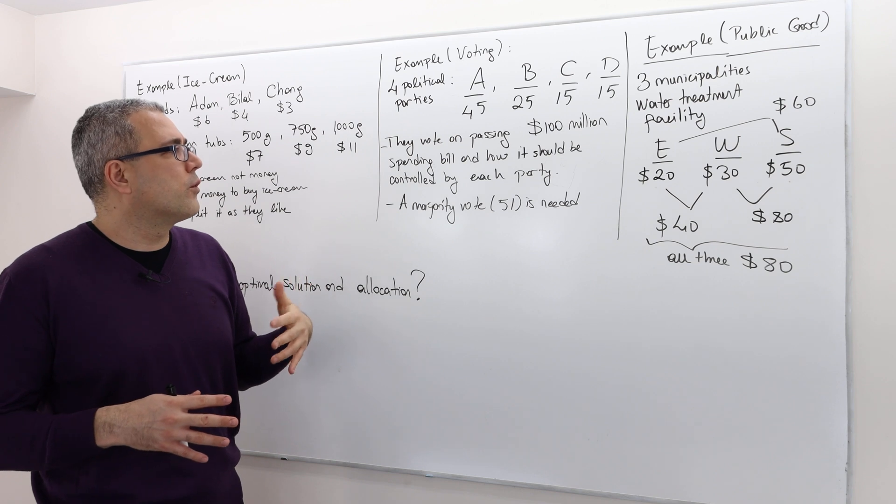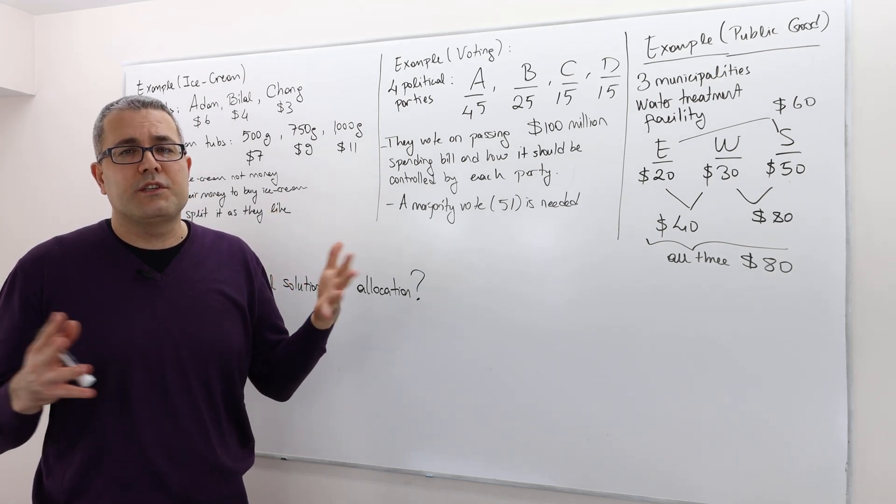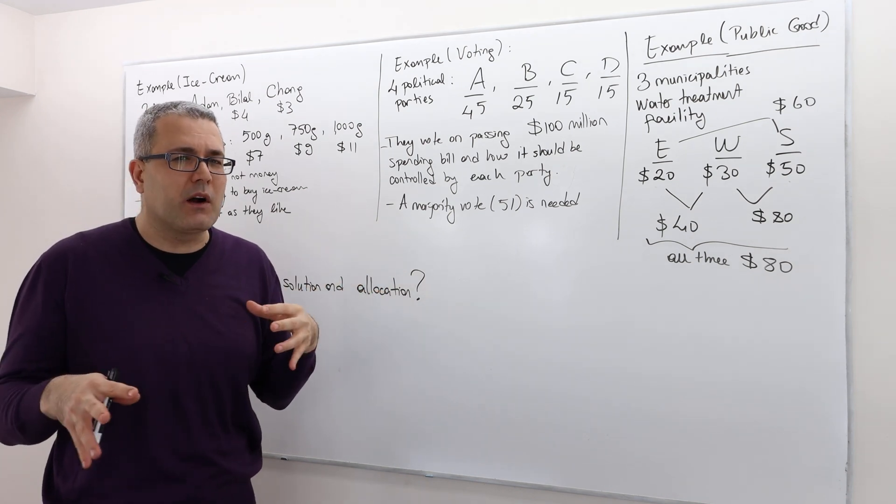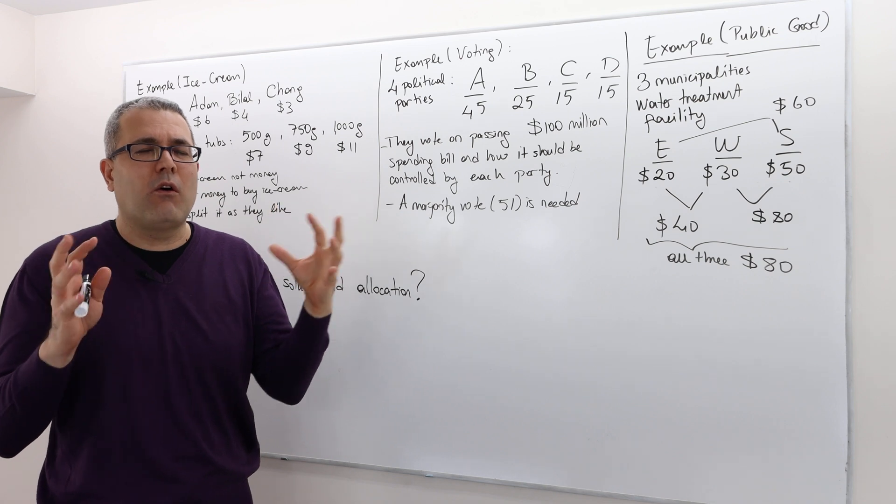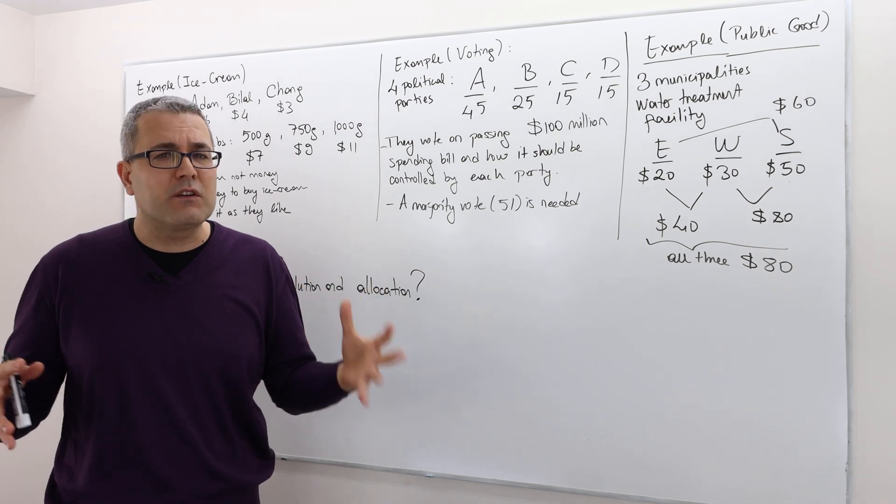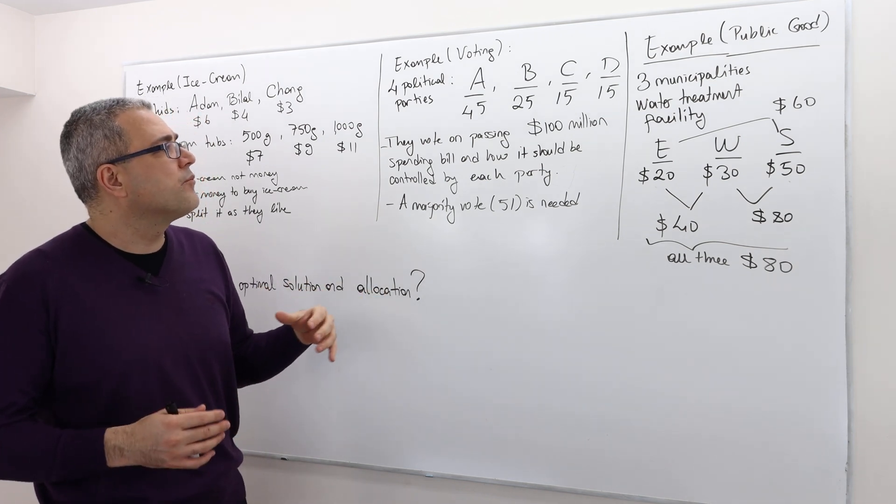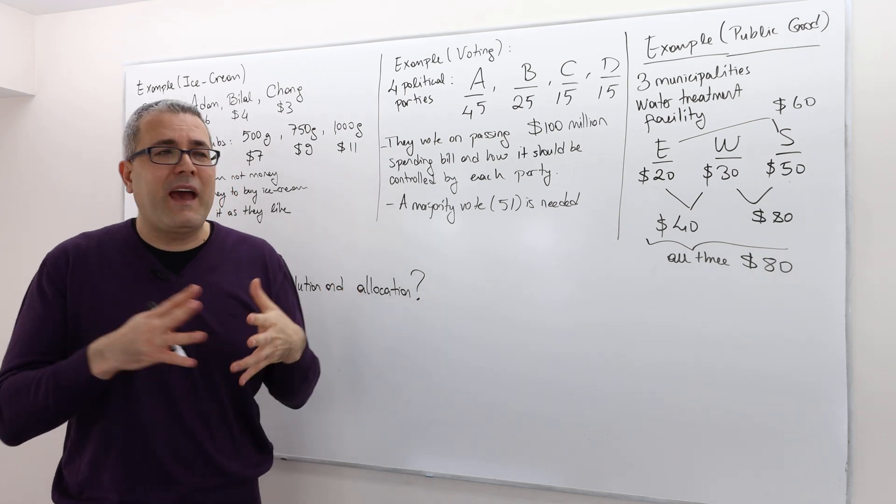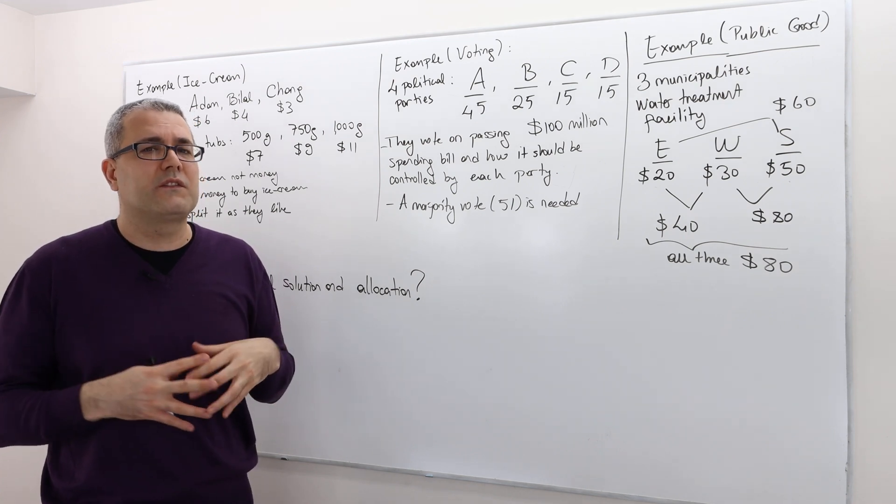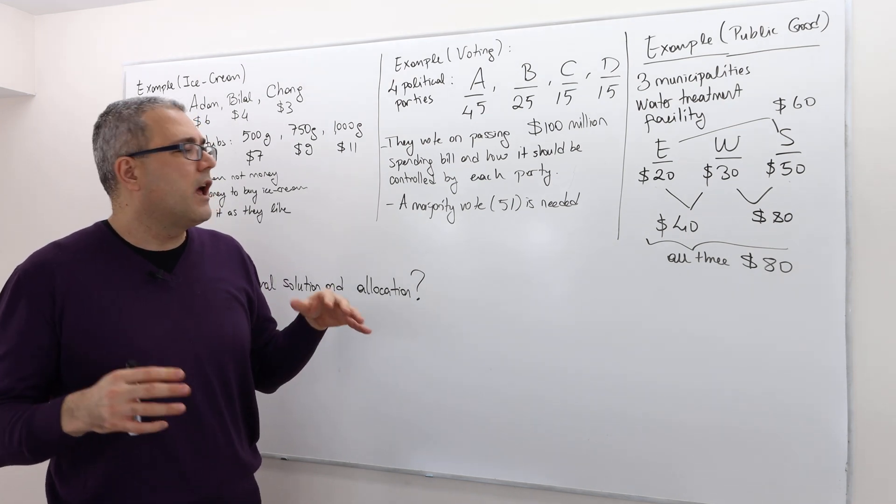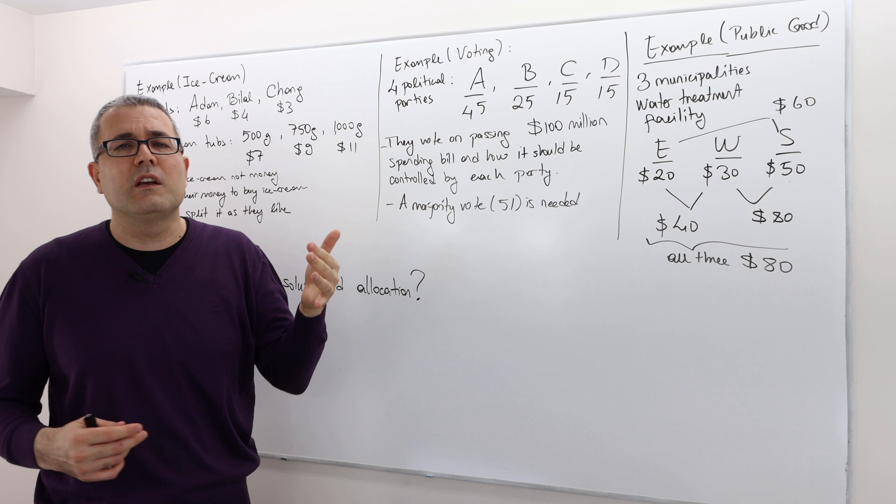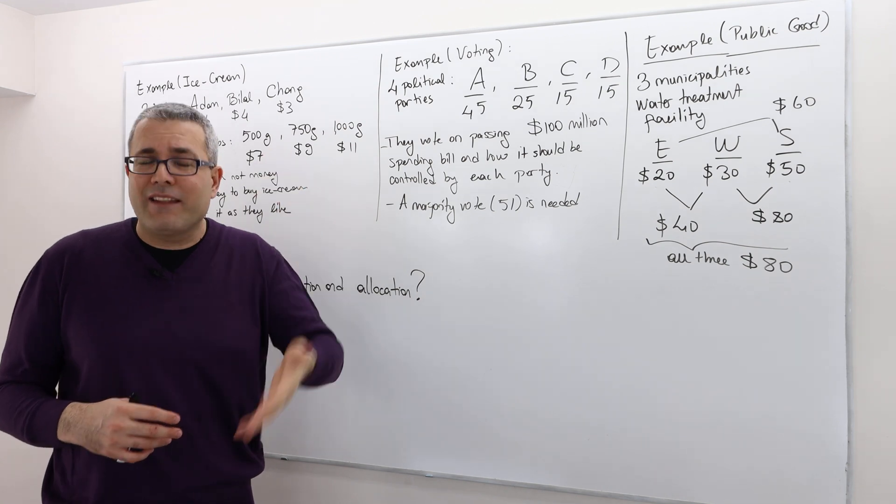Well, they're about to vote for a new spending bill, which is a total of 100 million dollars, and how it should be controlled by each party. Should this whole amount, 100 million dollars, be managed by only one party or divided between several parties? Well, in order to pass this spending bill and control this 100 million dollars, a majority vote, or 51 votes, is needed.